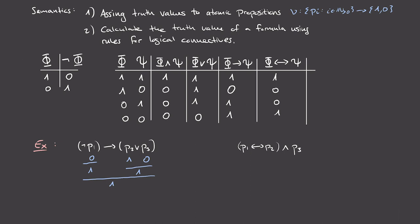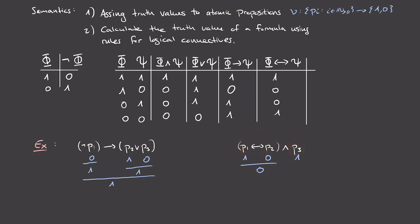Let's do the second example a bit more quickly. Here let's say I have 1 for p1, 0 for p2, and 1 for p3. The formula is '(p1 if and only if p2) and p3'. First I need to calculate what's in the bracket: phi is 1, psi is 0, and using equivalence on them I get 0 because the truth values are different. Now I'm combining this entire statement — with truth value 0 — with p3 (which has truth value 1) using conjunction. The conjunction is false because it's only true if both values are true. So this entire statement has a value of false.